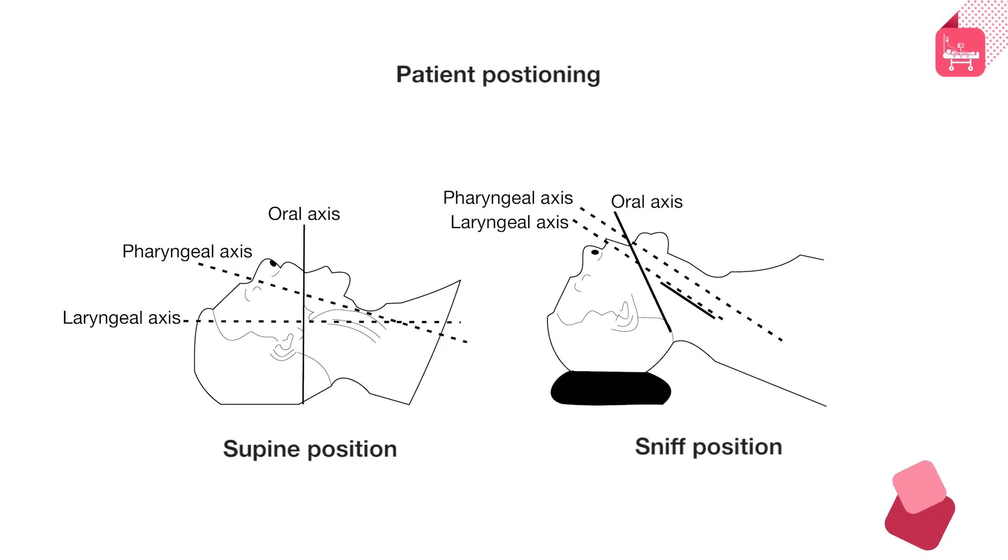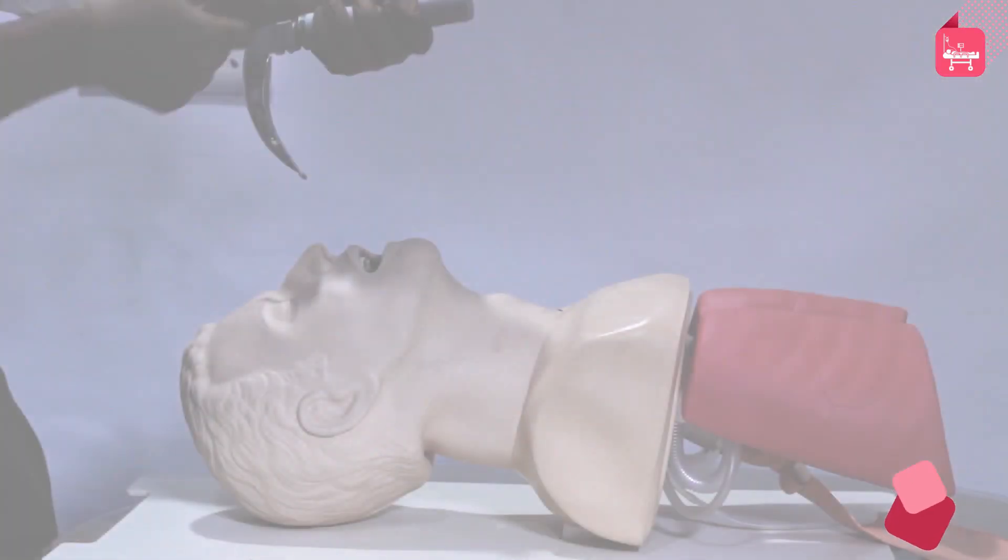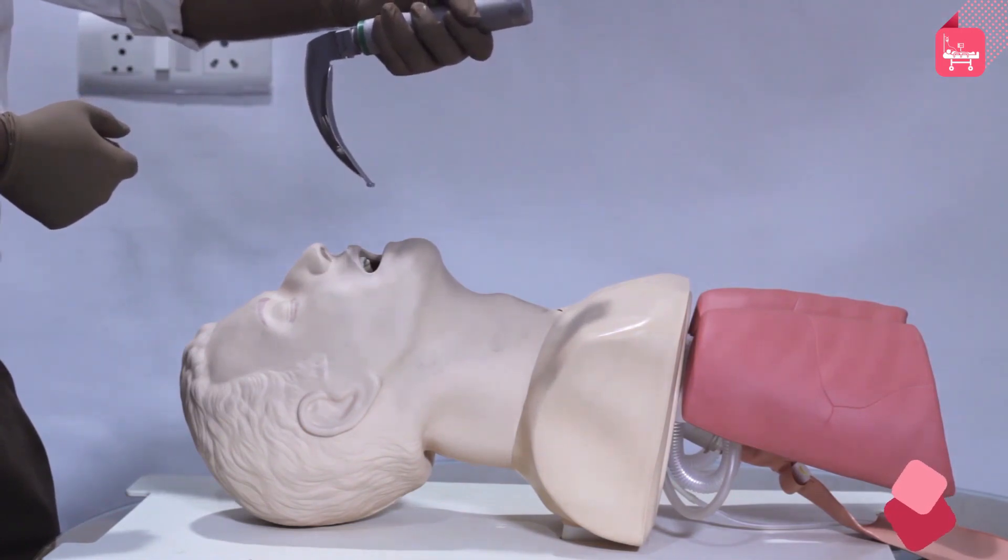Direct laryngoscopy: the operator should wear gloves, gown, and goggles, and stand at the supine patient's head end. Open the patient's mouth and remove foreign material if any, manually or by suction. Separate lips and pull the upper jaw to open the patient's mouth.